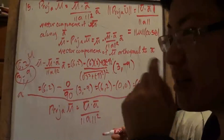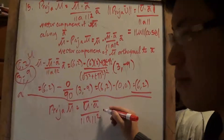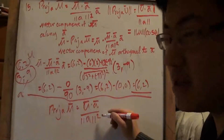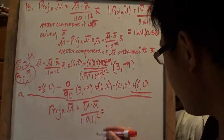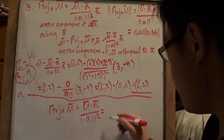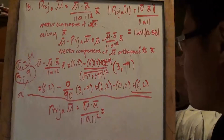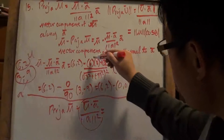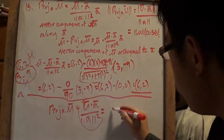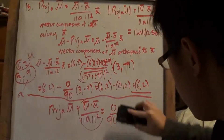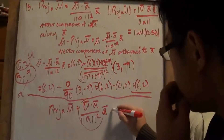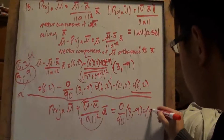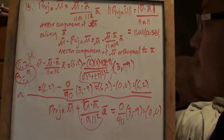So that's what you get for question 15. The projection gives a zero vector (0, 0) since the dot product was 0 over 90. The vector component of u along a, which is the projection part, is just (0, 0). And the orthogonal part is u minus projection, which gives the full vector u back since the projection was zero. That's the expected result for question 15.